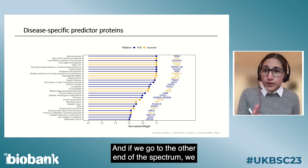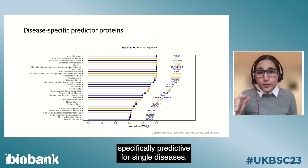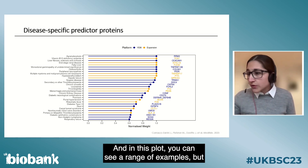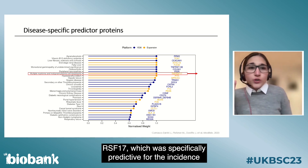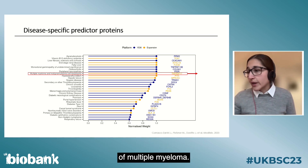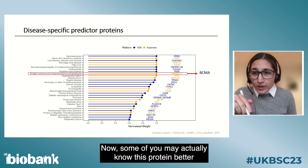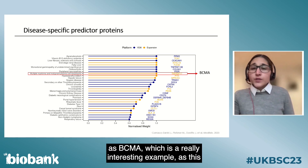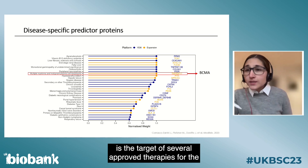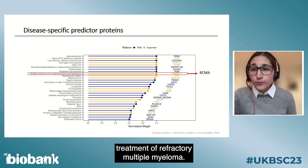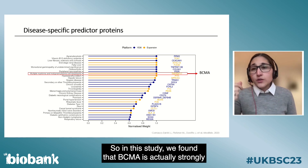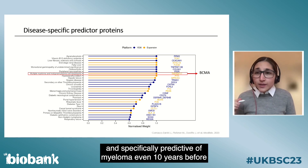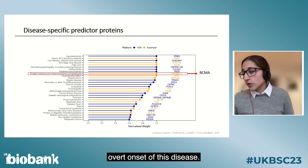At the other end of the spectrum, we can identify proteins that are specifically predictive for single diseases. One notable example is TNFRSF17 — better known as BCMA — which was specifically predictive for the incidence of multiple myeloma. This is a particularly interesting finding as BCMA is the target of several approved therapies for the treatment of refractory multiple myeloma. In this study, we found that BCMA is strongly and specifically predictive of myeloma even 10 years before the overt onset of the disease.